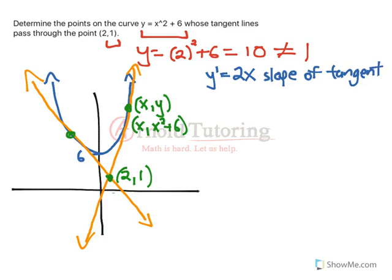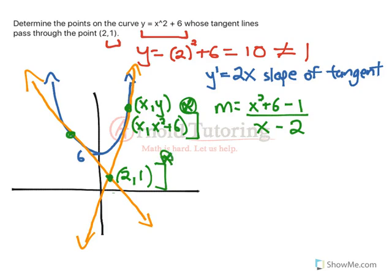But we also know the slope between any point with these coordinates and (2, 1), slope is just rise over run. So it's x squared plus 6 minus 1, that's y2 minus y1, over x minus 2, which is x2 minus x1. I'm just taking grade 10 math, one point to another point, the slope between them is just y2 minus y1 over x2 minus x1.